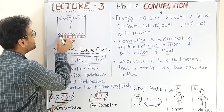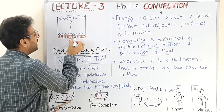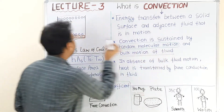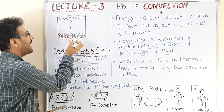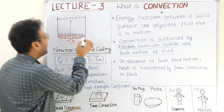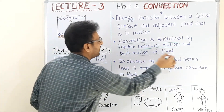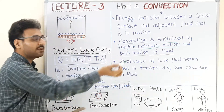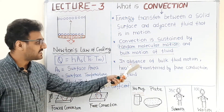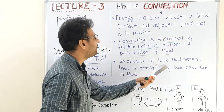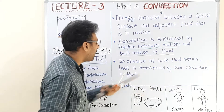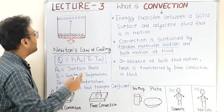This layer moving from one region to another contains random molecular motion due to high temperature and high molecular energy of the molecules. When this layer moves, bulk motion of fluid is also present. Now consider the third statement: in the absence of bulk fluid motion, heat is transferred by pure conduction in the fluid.